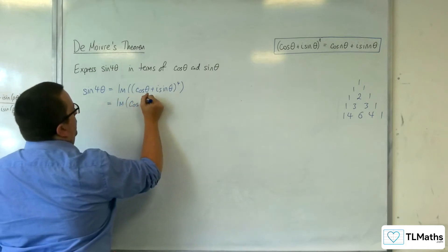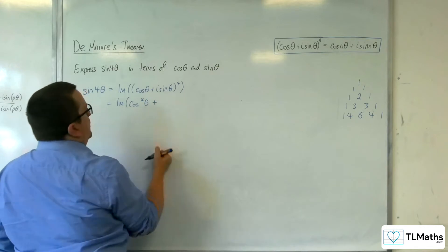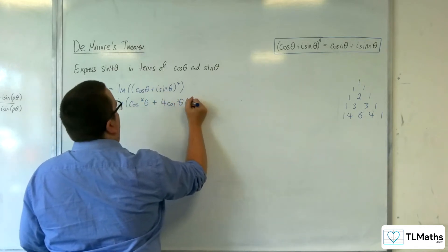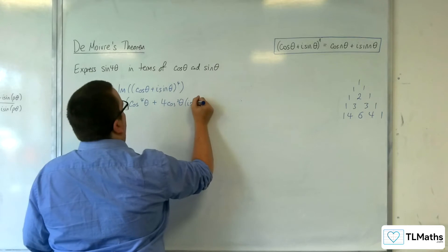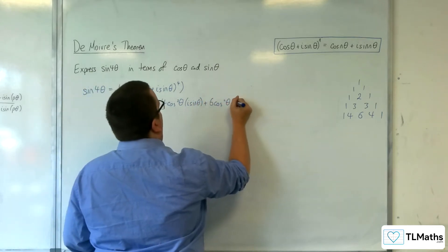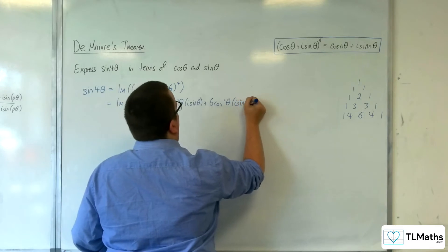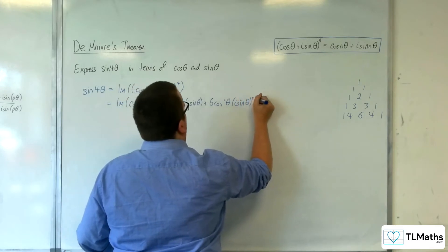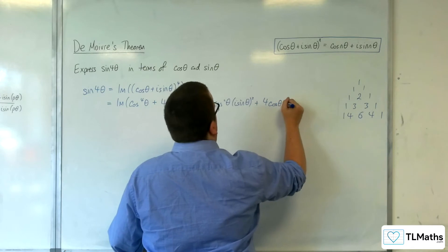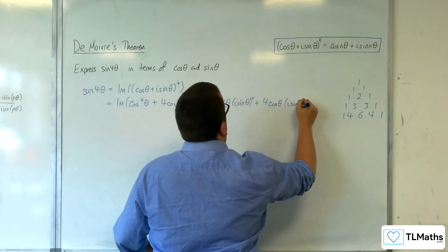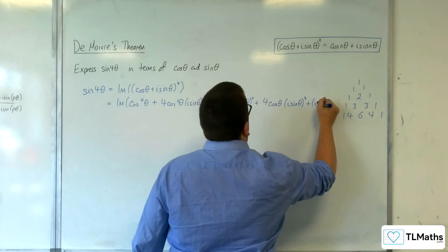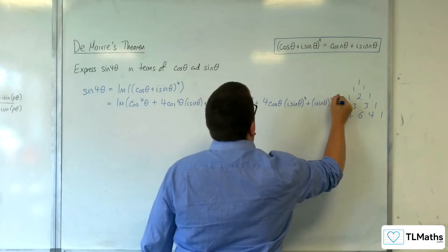we're going to get cosine to the 4 theta, plus 4 cosine cubed theta times i sine theta, plus 6 cosine squared theta times i sine theta squared, plus 4 cosine theta times i sine theta cubed, plus i sine theta to the 4.